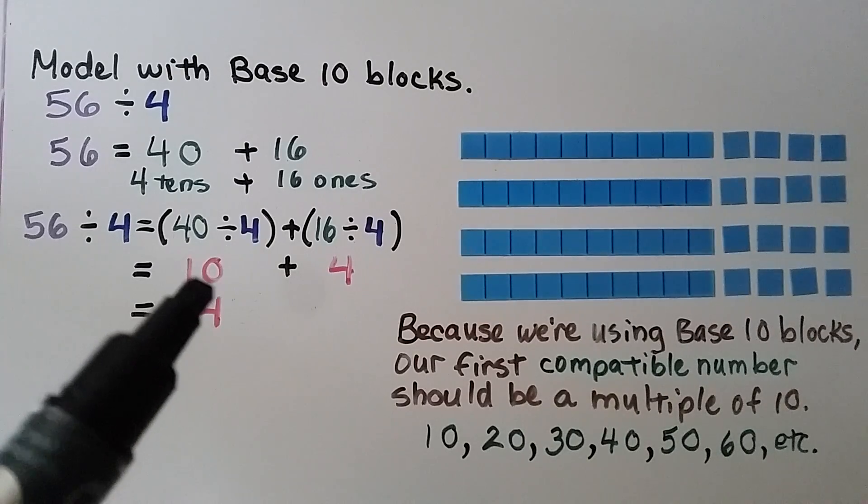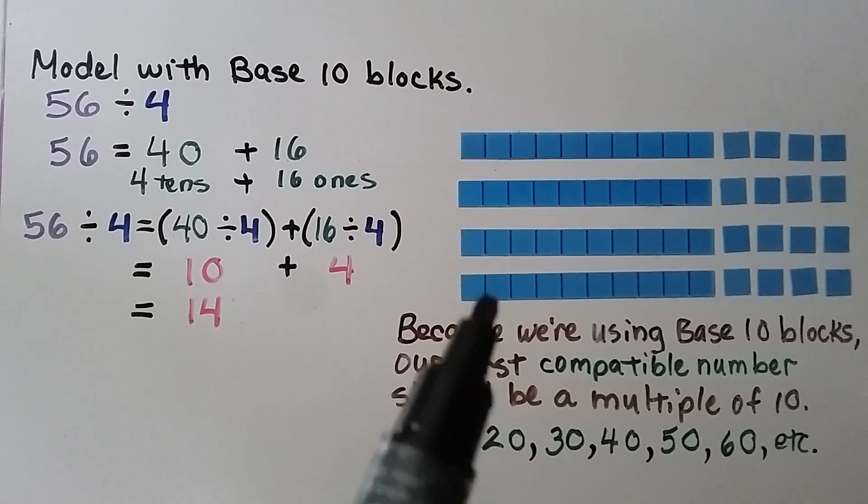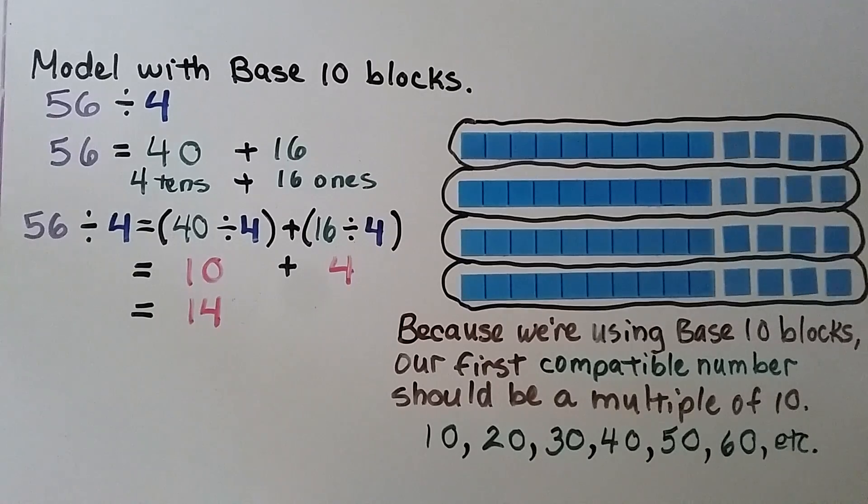40 divided by 4 is 10. And 16 divided by 4 is 4. So we have a 10 and 4 ones in each group. We have 14 in each group. 56 divided by 4 is equal to 14.